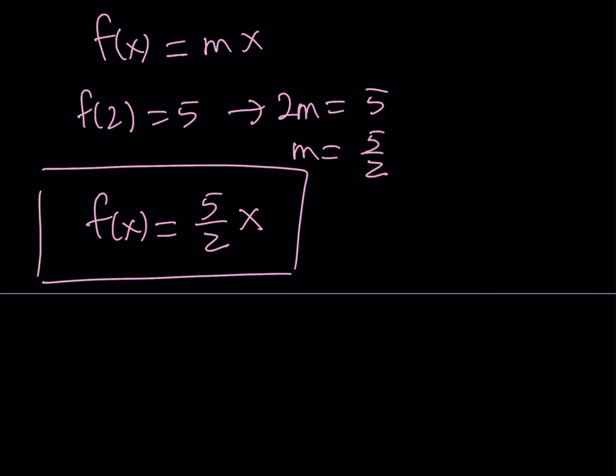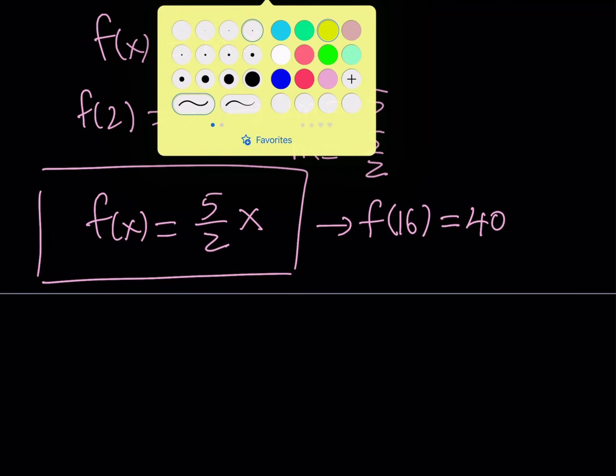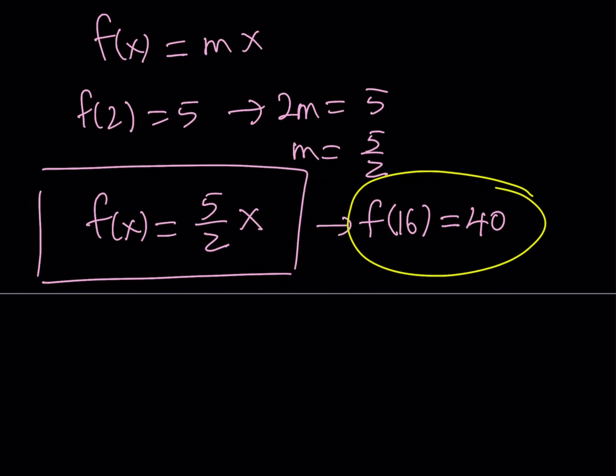So this gives us f(x). We found the solution, a particular solution. And from here, we can evaluate f(16). This is what we're trying to find. And f(16) just becomes 5 times 8, which is equal to 40. So that's going to be the solution we are looking for.